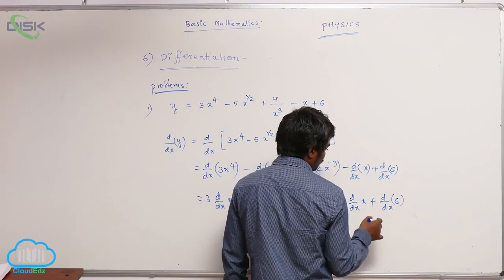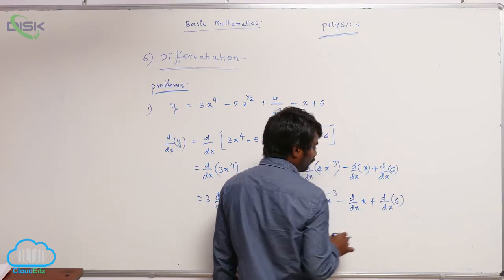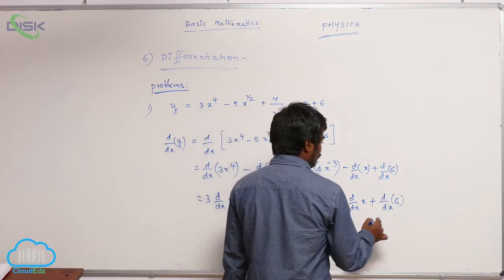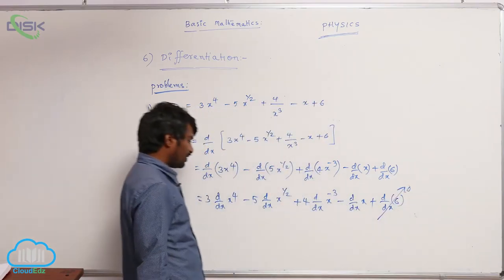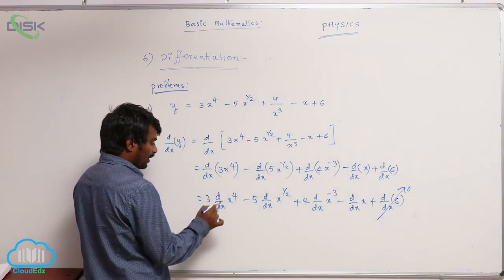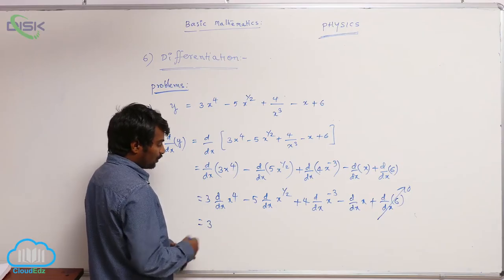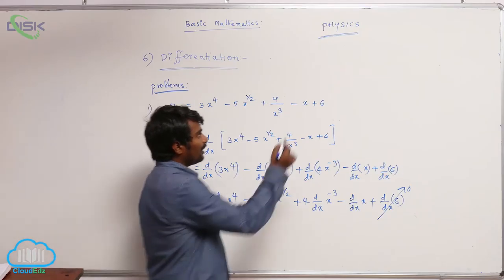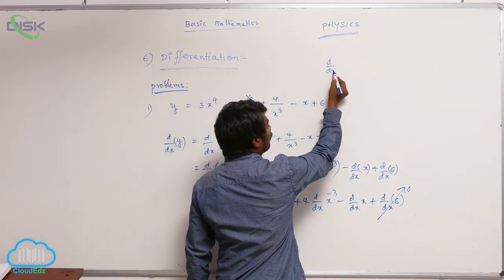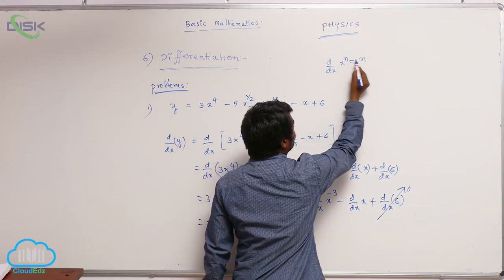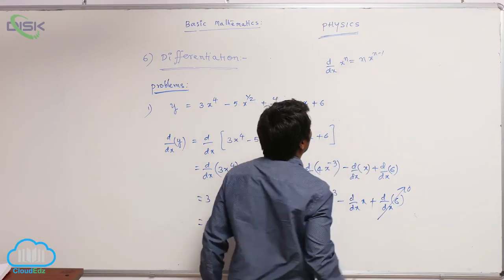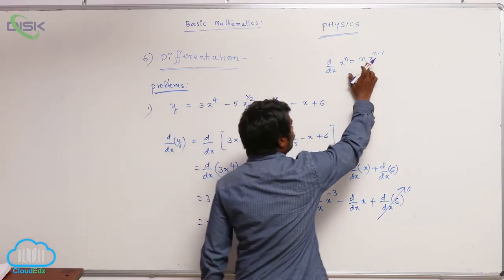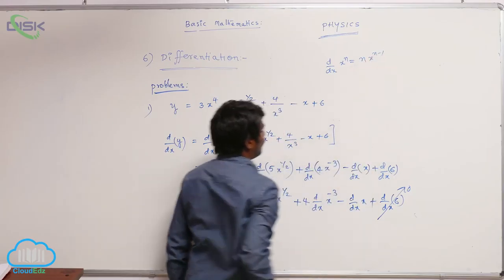Anyway, 6 is constant, so differentiation of constant will be 0. For 3 times d/dx of x^4, you can use which formula? It is d/dx of x^n. So d/dx of x^n equals n times x^(n-1) is the formula, right? That I am going to use here. So x^4, 4 times x^(4-1) is x^3.